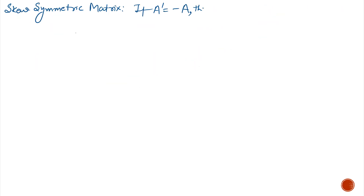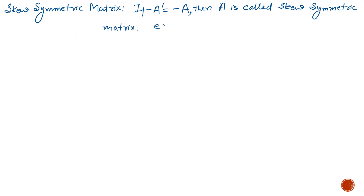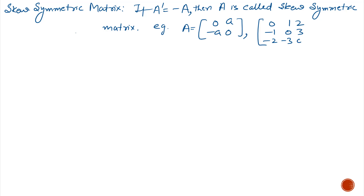Next is the skew-symmetric matrix. If the transpose of a matrix becomes the negative of itself — that is, Aᵀ equals −A — then it is called a skew-symmetric matrix. For example, the 3×3 matrix 0, 1, 2, −1, 0, 3, −2, 3, 0 becomes its own negative when transposed.